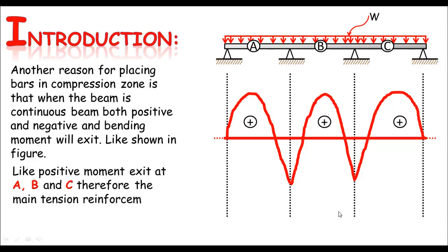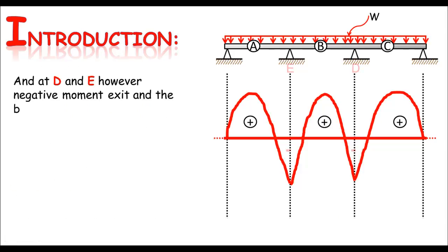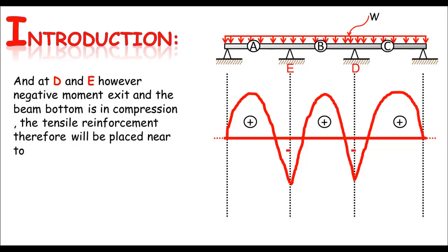Therefore, the main tension reinforcement will be placed at the bottom of the beam. At points D and E, however, negative moment exists and the bottom of the beam is in compression, so the tensile reinforcement will be placed near the top of the beam. This is straightforward as we see in practice.